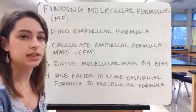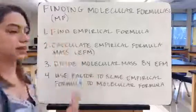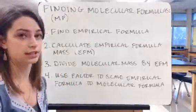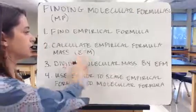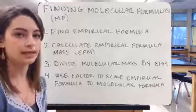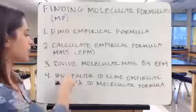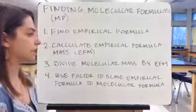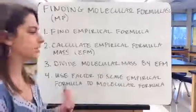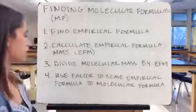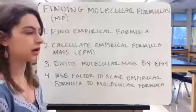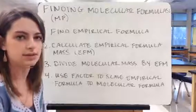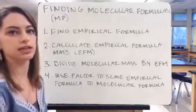Now let's look at how to find molecular formulas. First, find the empirical formula using the steps we just covered. Next, calculate the empirical formula mass — essentially the molar mass based on the empirical formula. Then compare that to the given molecular mass by dividing the molecular mass by the empirical formula mass. This gives a factor — 2, 3, or 4 — by which the molecular formula is larger. Finally, multiply each subscript in the empirical formula by that factor to get the molecular formula.